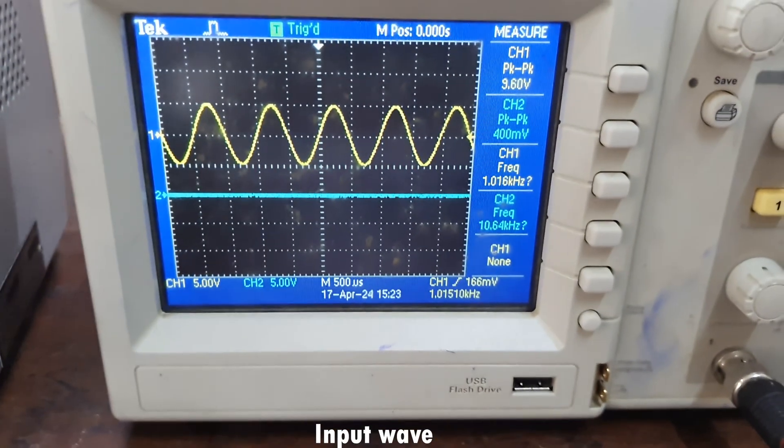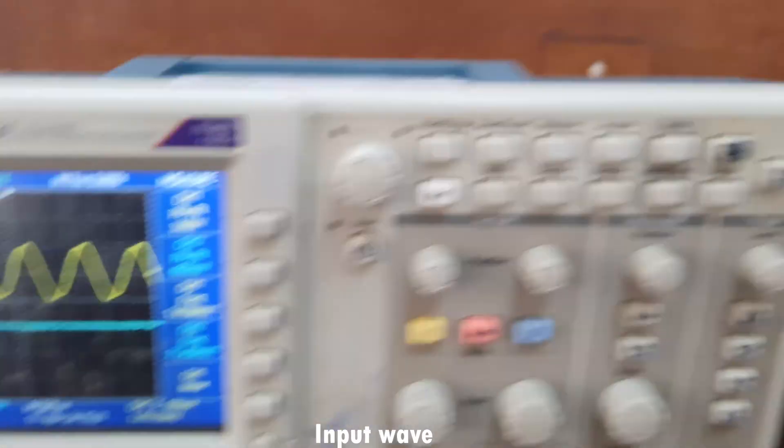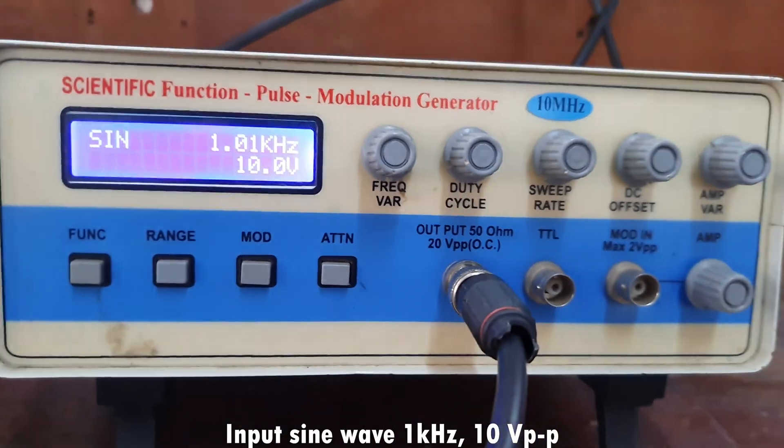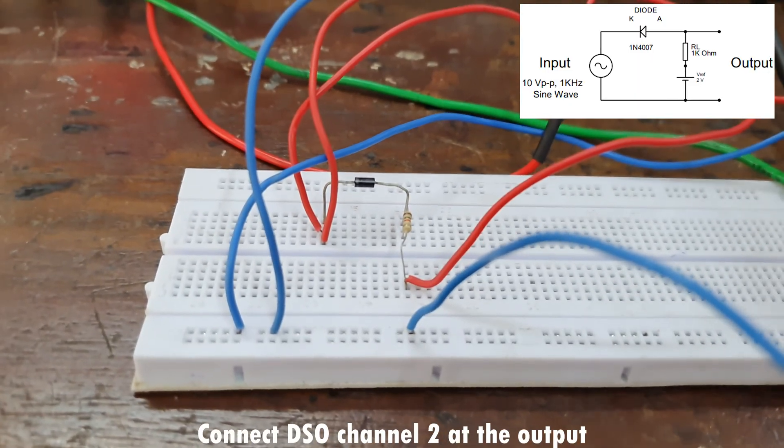Now you can see the input waveform. It's a sine wave with 1 kilohertz frequency and 10 volt peak-to-peak. In the function generator, set amplitude as 10 volt peak-to-peak and 1 kilohertz. Now connect the DSO channel 2 to see the output waveform.